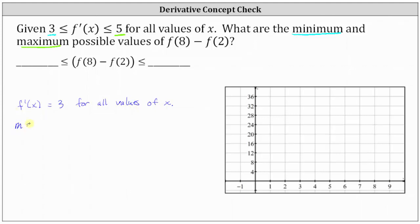So if we have a line with a slope of 3, remember the slope is equal to the change in y divided by the change in x, which in this case would be 3 over 1, indicating that y increases by 3 each time x increases by 1. In our case, delta x equals 8 minus 2, which is 6. So multiplying the numerator and denominator by 6 gives an equivalent slope of 18 over 6, meaning y increases by 18 when x increases by 6. So the minimum possible value of f of 8 minus f of 2 is 18.